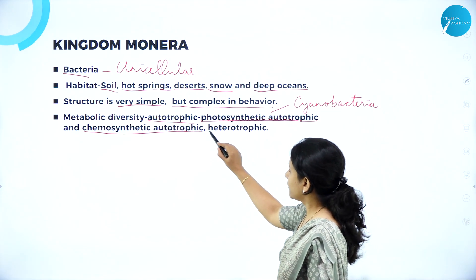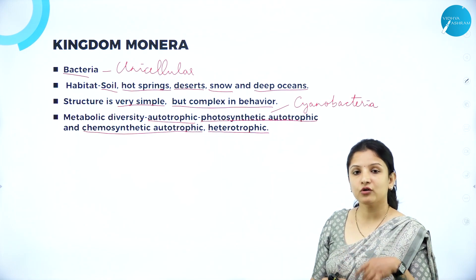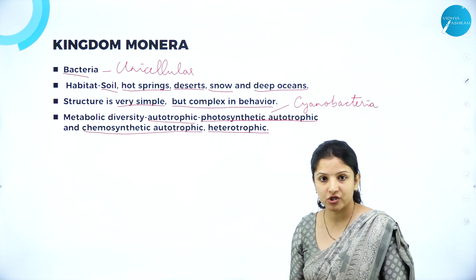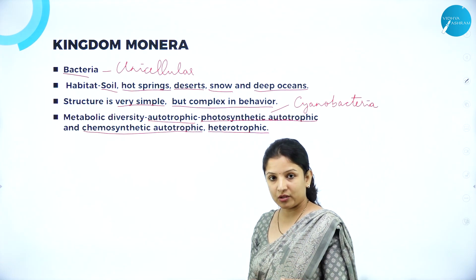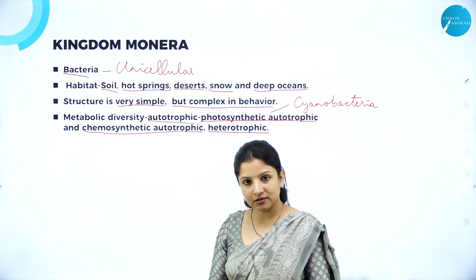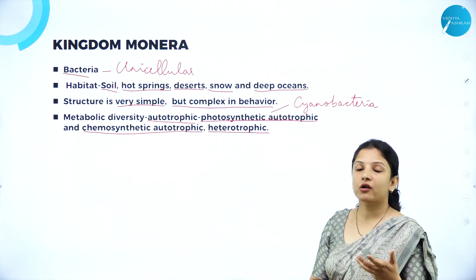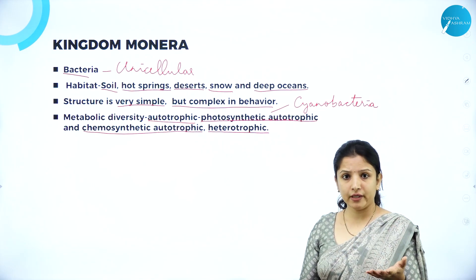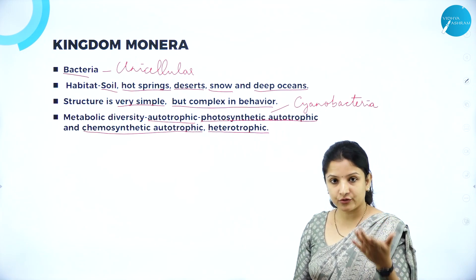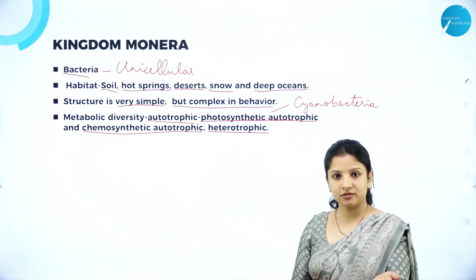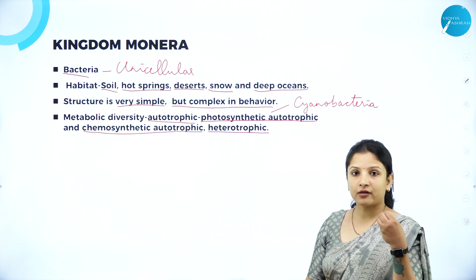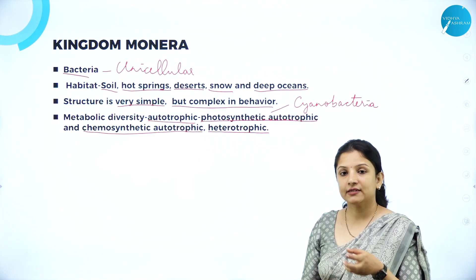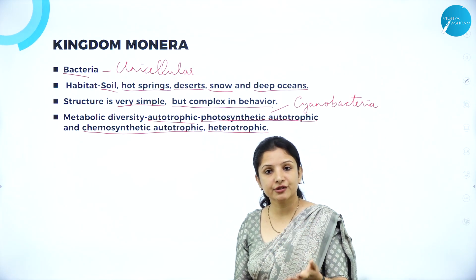Kingdom Monera can be chemosynthetic autotrophs wherein they can synthesize food by making use of some chemicals like nitrogen, nitrates, nitrites, and ammonia. And they can be heterotrophic wherein they can depend on other organisms for their food. If they are heterotrophic, they can be pathogenic wherein they can cause diseases in human beings, in animals — that is farm animals, pet animals — and they can also cause diseases to crop plants. Like we have bacteria that cause cholera, typhoid, tetanus, and also diseases in plants, like citrus canker — a disease caused in citrus fruit plants.